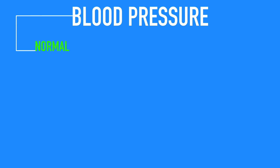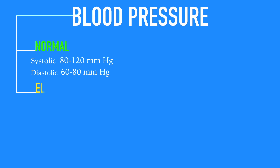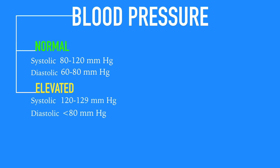In November of 2017, the standards for blood pressure changed. Let's take a look at the new blood pressure classification. For normal, we now have readings of systolic blood pressure from 80 to 120 mmHg and a diastolic of 60 to 80 mmHg. For elevated, which used to be pre-hypertension, we now have readings of systolic blood pressure of 120 to 129 mmHg and a diastolic of 80 or less mmHg.